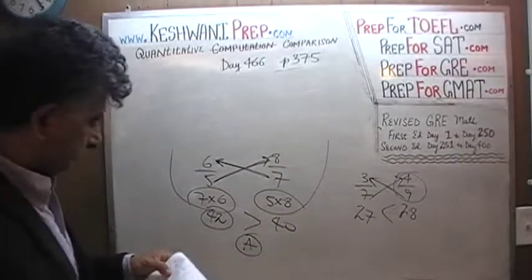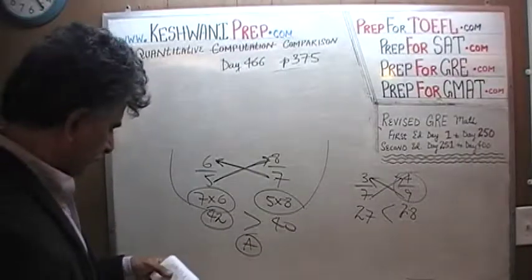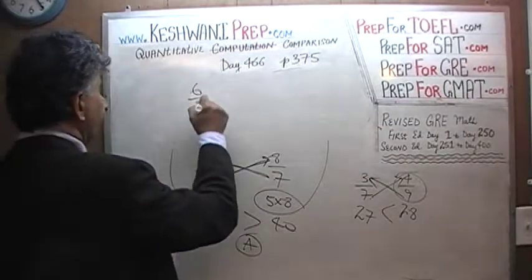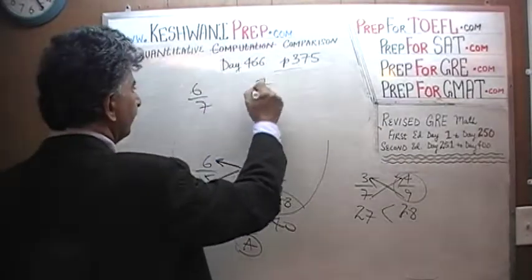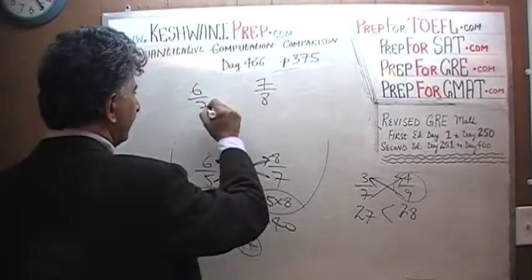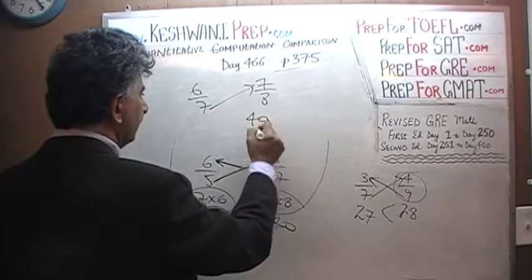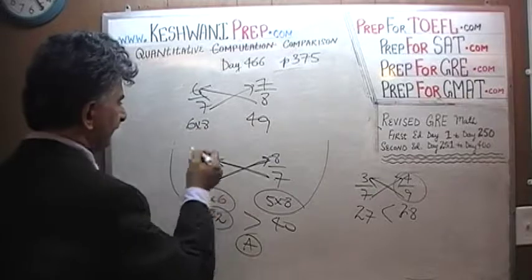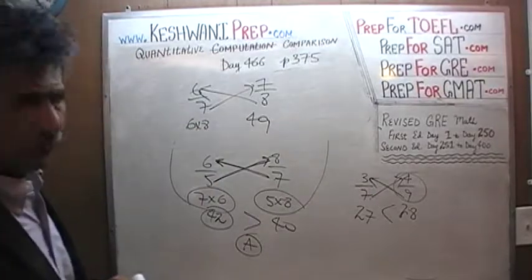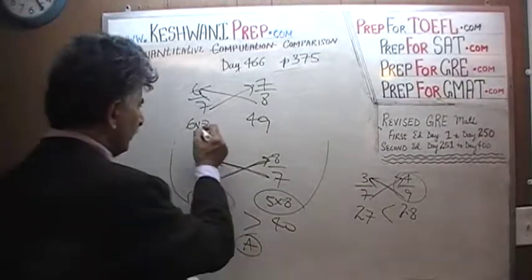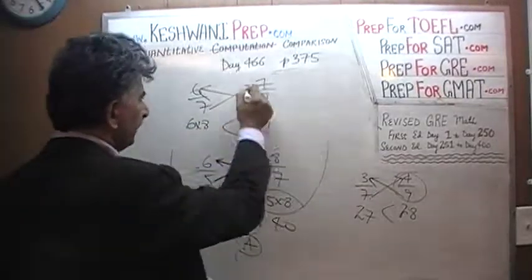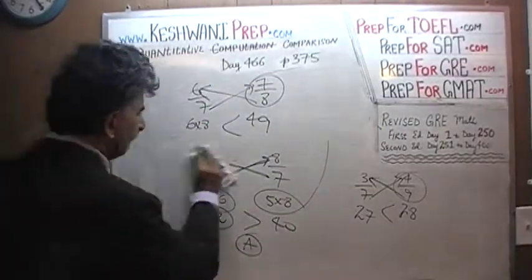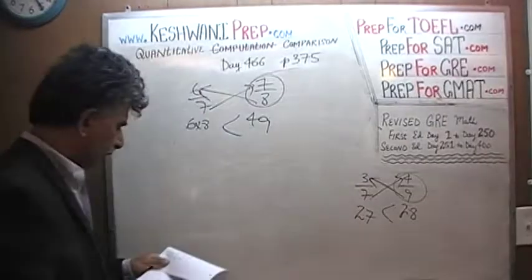It's very important not to be cocky on the exam, because that's when you begin to make careless mistakes. Next: 6/7 versus 7/8. 7 times 7 is 49, and 6 times 8 is 48. 48 is less than 49 — the answer is 7/8.